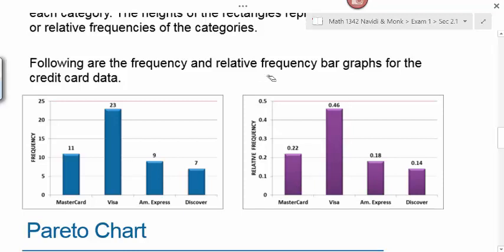Following are the frequency and relative frequency bar graphs for the credit card data. Notice that the shape of the bars on both of these look exactly the same. That's because they represent the same data. Whenever you're reading a bar graph, the vertical axis here, the y-axis, would tell you whether or not you're looking at counts, which is the frequency, or percents or proportions, which is the relative frequency. And then your categories are listed across the bottom.